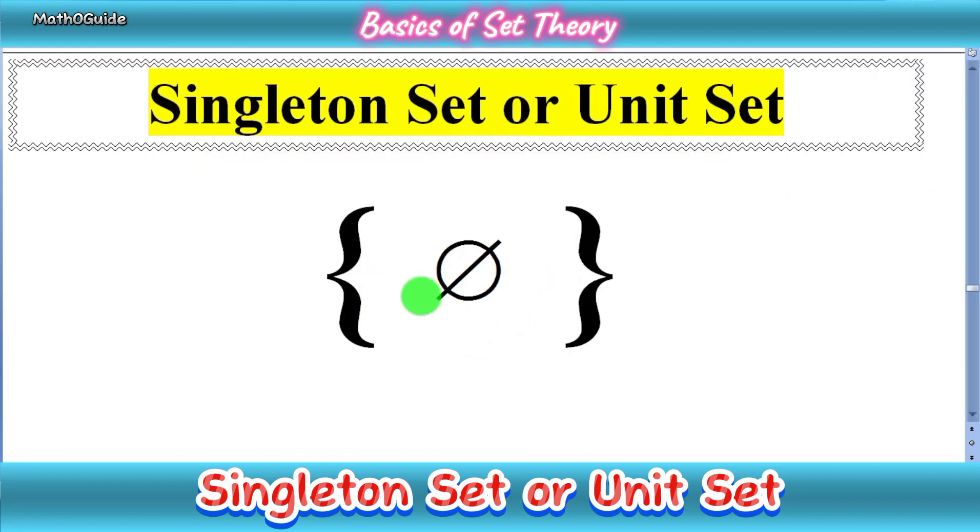As you can see, we have written a curly bracket, and in the curly bracket we have a symbol that is the symbol of the empty set. Most students get confused here: this is not an empty set, this is a singleton set.